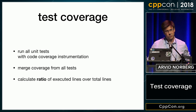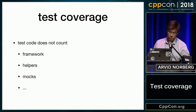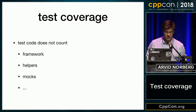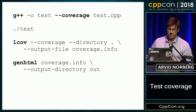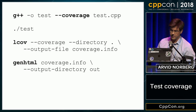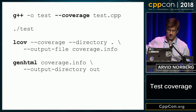The things you want to remove right off the bat are all of the test code — that doesn't count. Remove the test framework, all the helper code you have, mocks, and so on. To build with test coverage, you say something like dash dash coverage — I haven't actually tested this, this might not work. You run the tests, LCOV.